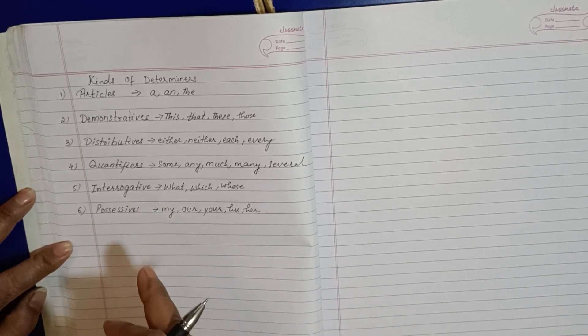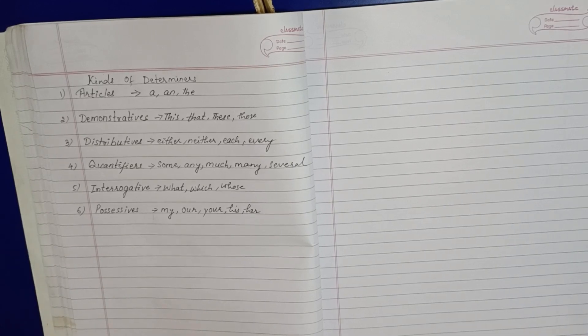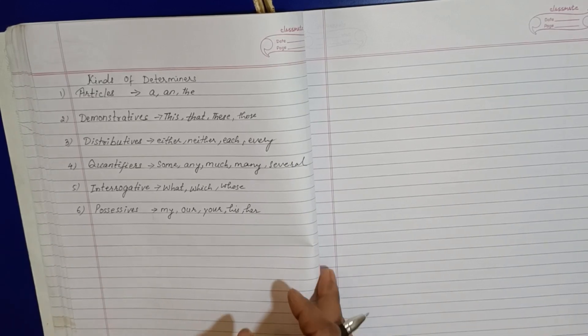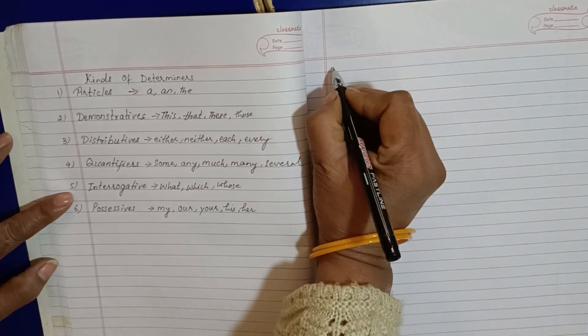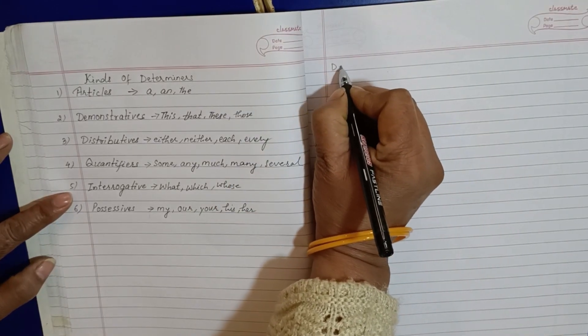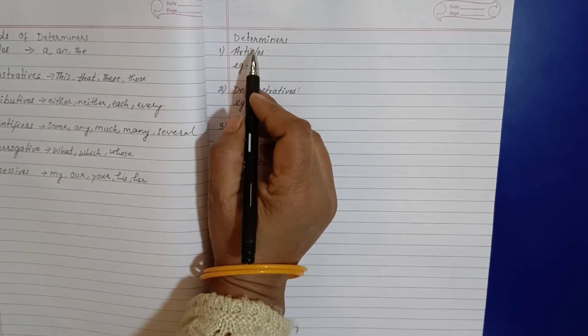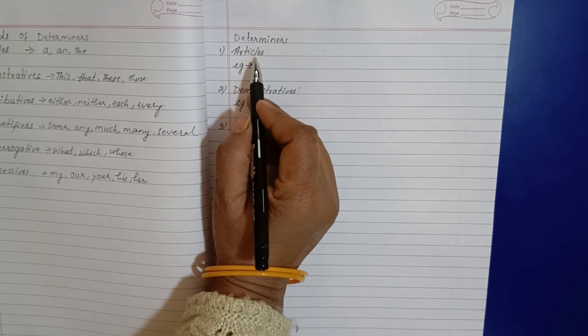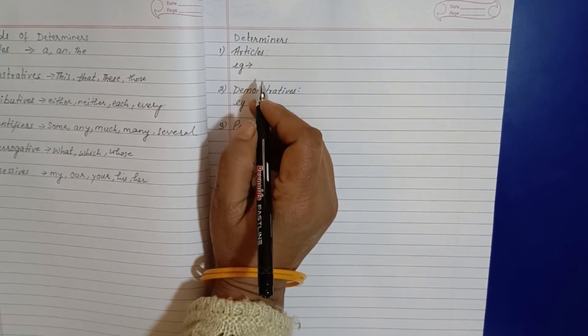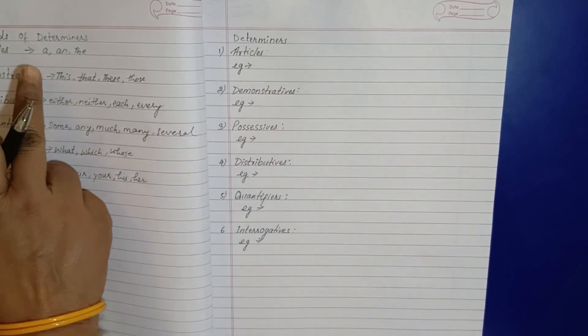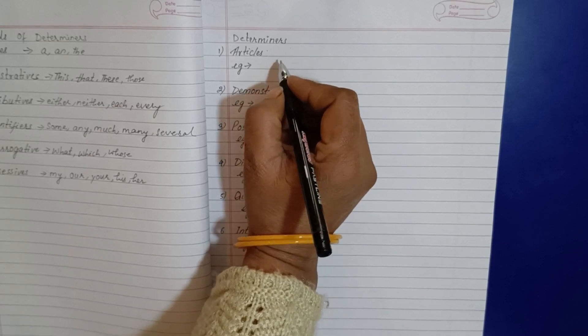Now I will explain how we have to use this one. So let us see. Determiners article. In article, what will be the example? Here I have asked you about articles a, an, and the. So how we have to use this one.